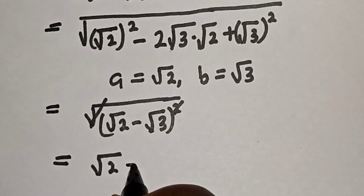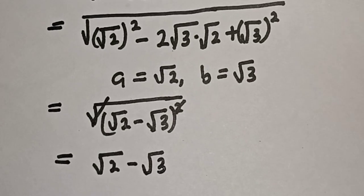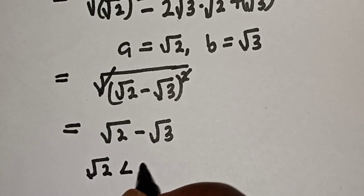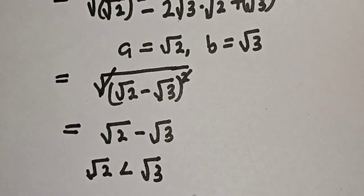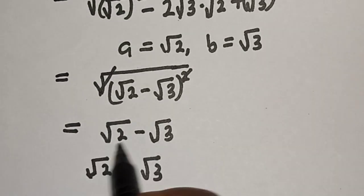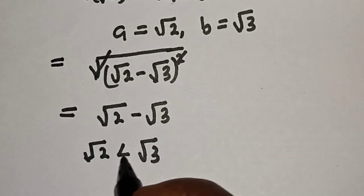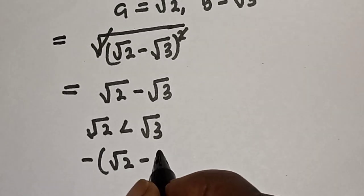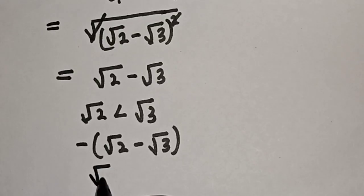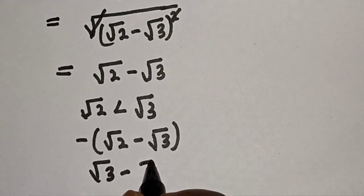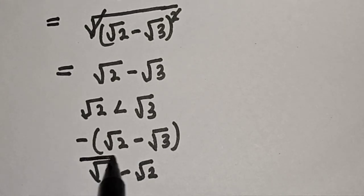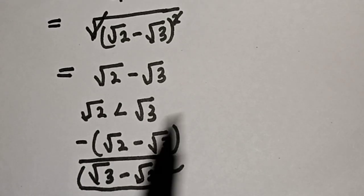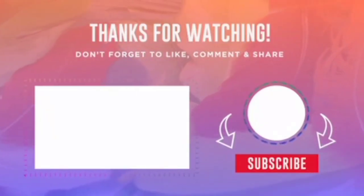This is equal to root 2 minus root 3. But since root 2 is less than root 3, we multiply by negative 1 — that is, minus bracket (root 2 minus root 3) — giving us root 3 minus root 2. This is the final answer. If you enjoyed the class, please don't forget to like, share, comment, and subscribe. Thank you.